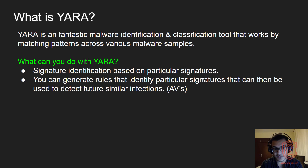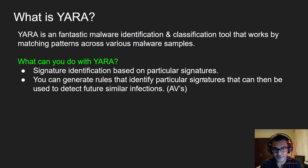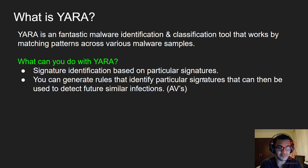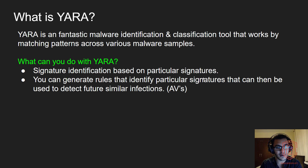What makes YARA special? First, it enables specific signature identification based on particular signatures you've decided upon. For example, if a sample was connecting to a command-and-control server in Russia or a particular IP, you could use that IP for future detection. You can generate rules that identify particular signatures to detect future similar infections, protecting a network or company from future attacks, and get an idea of where attackers are coming from.